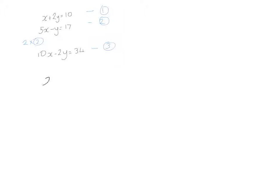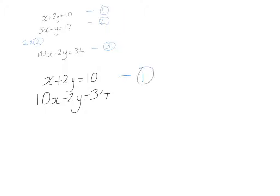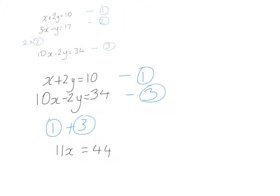So I've got equation one: x plus 2y equals 10, and equation three: 10x minus 2y equals 34. Adding equations one and three together, the y variables cancel out. That gives me 11x equals 44. Dividing both sides by 11, I get x equals 4.